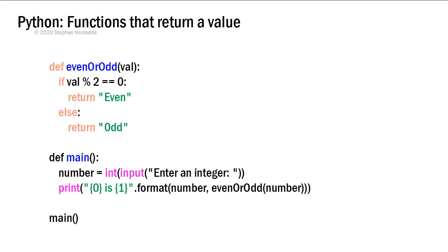Here is another example. I've got my main function being called, and in that function I ask the user to enter an integer, and I convert that to an integer value and assign it to number. And then in the print statement, we're going to print whether that number is even or odd. And notice that here I am actually calling a function from that print statement within the format method. And so I'm going to put the number in placeholder zero, but even or odd, the return of that from the function called even or odd will go into placeholder one.